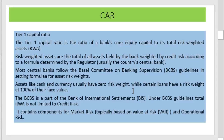Assets like cash and currency usually have zero risk-weight, while certain loans have a risk-weight at 100% of face value. The Basel Committee on Banking Supervision, part of the BIS, guidelines specify that total risk-weighted assets are not limited to credit risk — they also contain components for market risk and operational risk.